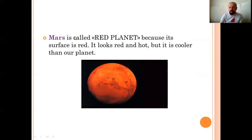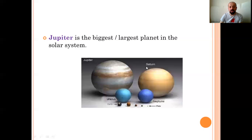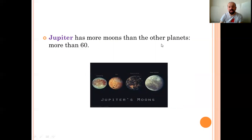Mars is called red planet. Mars, kızıl gezegen olarak adlandırılıyor. Because its surface is red. Çünkü onun yüzeyi, surface, yüzeyi, kırmızı. It looks red and hot. Kırmızı ve sıcak görünüyor. But it is cooler than our planet. Fakat bizim gezegenimizden daha soğuk. Her ne kadar kırmızı görünse de. Jupiter is the biggest, largest planet in the solar system. Yes. Jupiter, Güneş sistemindeki en büyük gezegendir. Jupiter has more moons than the other planets. More than 60. Moon, normalde ay anlamında kullanıyoruz. Burada uydu anlamında da kullanabiliyoruz. Jupiter'in diğer gezegenlerden daha fazla uydusu var. 60'dan fazla uydusu varmış. Jupiter'in zaten en büyük gezegende oydu. Çekim kuvvetinden dolayı da normal karşılanabilecek bir uydu sayısı.